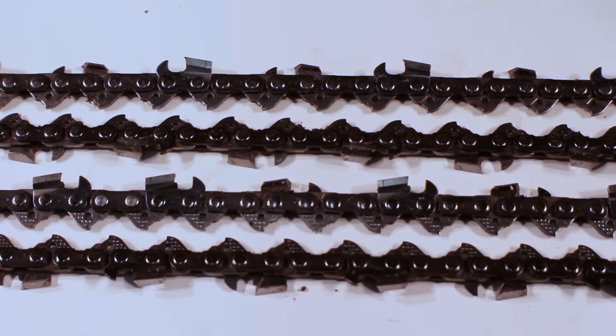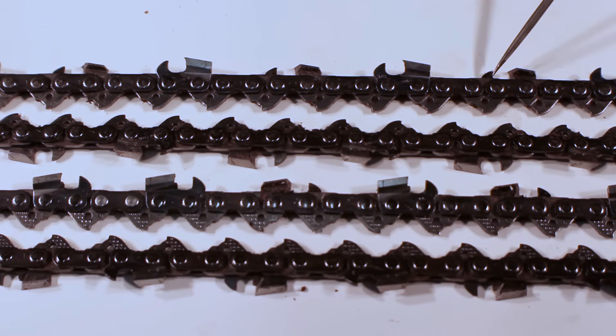Another difference in chain types is the grind, which is just how it's sharpened. Again I have two chains for my 661 - same pitch, gauge and drivelink count. This top is round ground, this bottom is square ground. 99% of you are not going to be doing anything with square ground chain. Most of what you'll see is round ground.